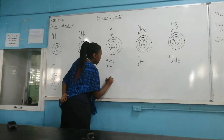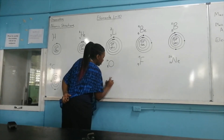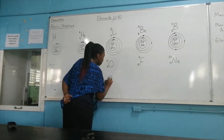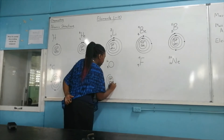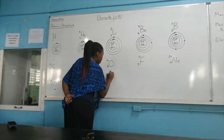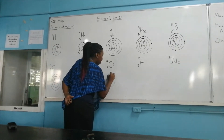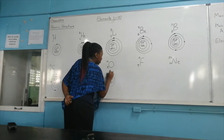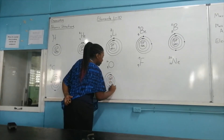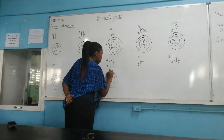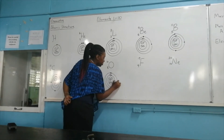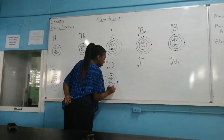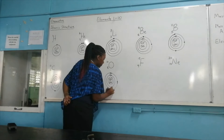Element number 8 — we cannot live without this one — is oxygen. We have two electrons on the first shell, which is full, so we draw a second shell, and we now have six electrons on this second shell.